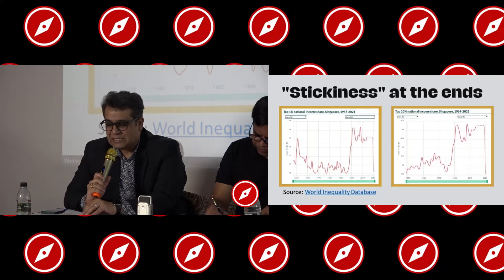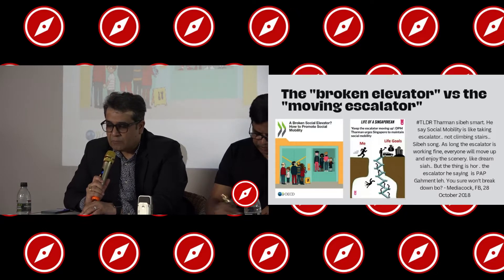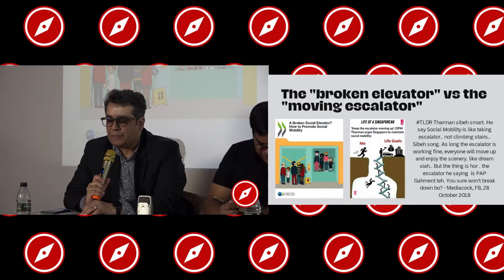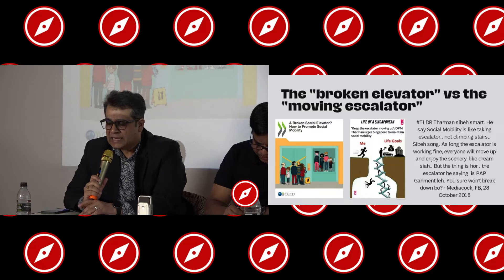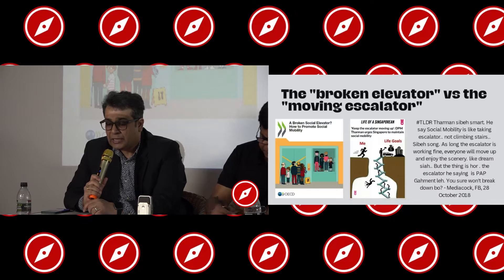The broken elevator versus the moving escalator. In June 2018, the OECD published a new report on social mobility, suggesting that the elevator of social mobility may be broken, and that unless it is fixed, there is a high risk of downward mobility and loss of social status — tending to reduce life satisfaction and undermine individual self-esteem, social cohesion, and people's feeling that their voice counts, particularly among middle and lower income people.